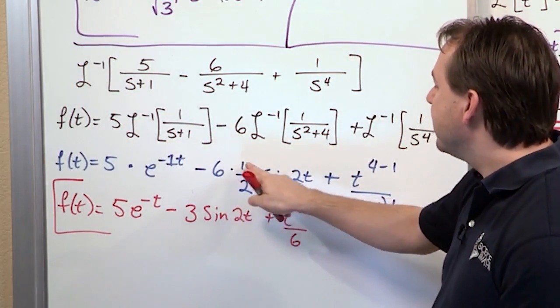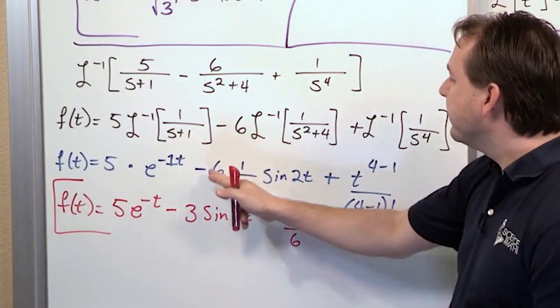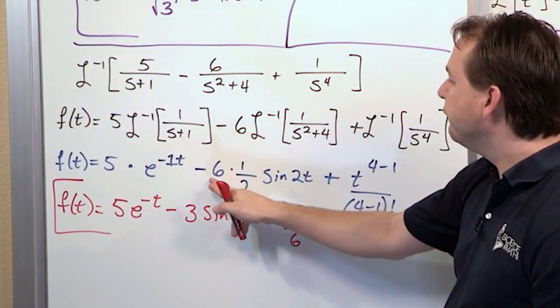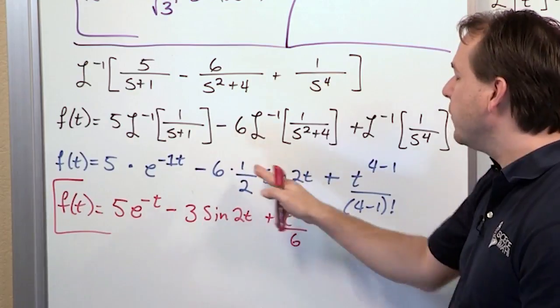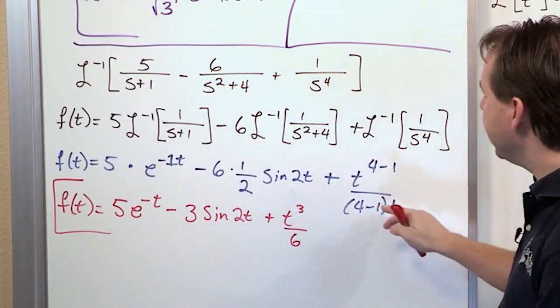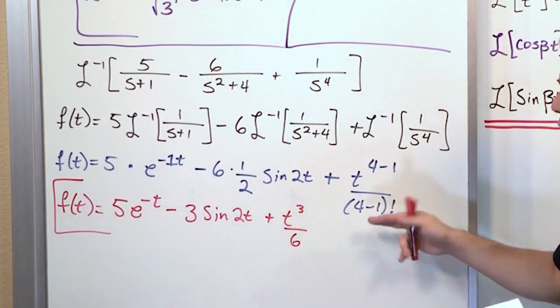I know that you know that 6 times a half is 3, but I didn't simplify it in this step because I want to show myself and remind myself exactly what I did. And the same thing here. I know that you know that 4 minus 1 is 3, so why would I write it this way?